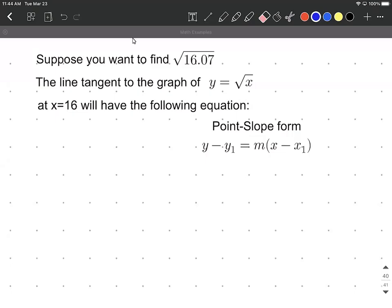All right, so what we want to do in this example is we would like to find the square root of 16.07. And to do so, what we're going to do is use a tangent line approximation, or sometimes referred to as a linear approximation.